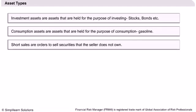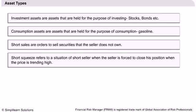Short sales are orders to sell securities that the seller does not own. For a short sale, the short seller: 1. Simultaneously borrows and sells securities through a broker. 2. Must return the securities at the request of the lender or when the short sale is closed out. 3. Must keep a portion of the short sale proceeds on deposit with the broker. 4. The short seller may be forced to close his position if the broker runs out of securities to borrow. This is known as a short squeeze, and the short seller will need to close his short position immediately at a loss when the price is high.